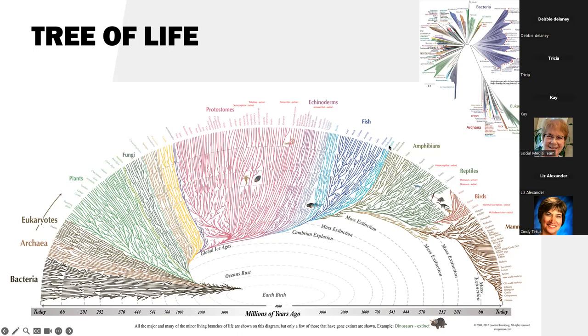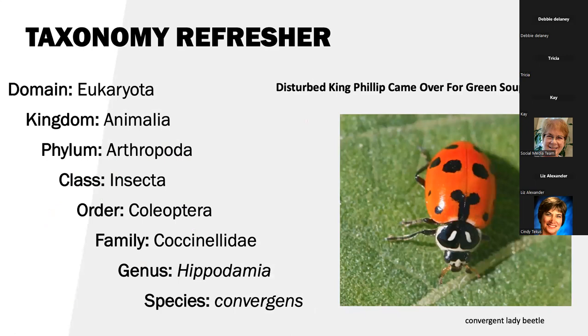Then we have plants, fungi, protosomes, fish. The insects are right here. Amphibians. And then humans are right here at the very tip, so we've just been around for a little bit.